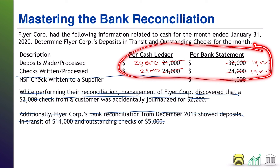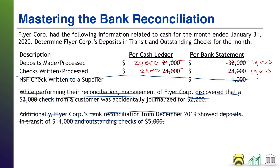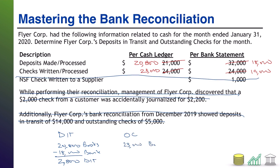Now every number is different from where we started, so those initial calculations are completely irrelevant. For deposits in transit: 20,800 in deposits per the books minus 18,000 deposits per the bank gives 2,800 in deposits in transit. For outstanding checks: 23,000 checks written per the books minus 19,000 checks processed by the bank gives 4,000 in outstanding checks. Problem solved.